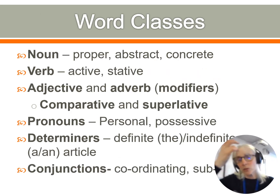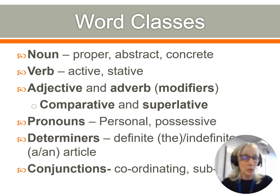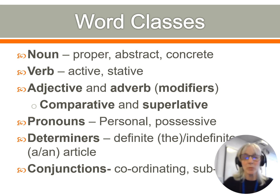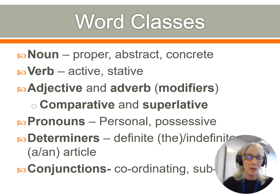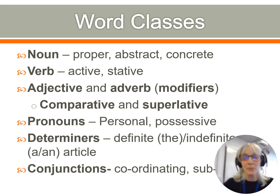Word classes — we do talk about these under lexis as well, but a quick reminder: the more detailed you can be in your labelling of word classes the better. So not just a noun, but what kind of noun. Proper nouns are names that have capital letters. Abstract nouns describe states and feelings and they're not concrete. A concrete noun is something you can actually draw or represent with a drawing, whereas abstract nouns are things like love, anxiety — things like that.